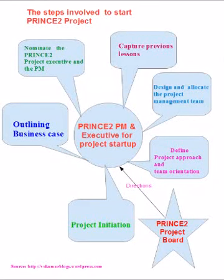In continuation of the previous session part one for the startup of the PRINCE2 project, I drew a chart to give some clarity on the steps involved. In this chart we can see you need to nominate the PRINCE2 project executive and the PM, capture the previous lessons, design and allocate the project management team, outline the business case, define project approach, team orientation, and project initiation.